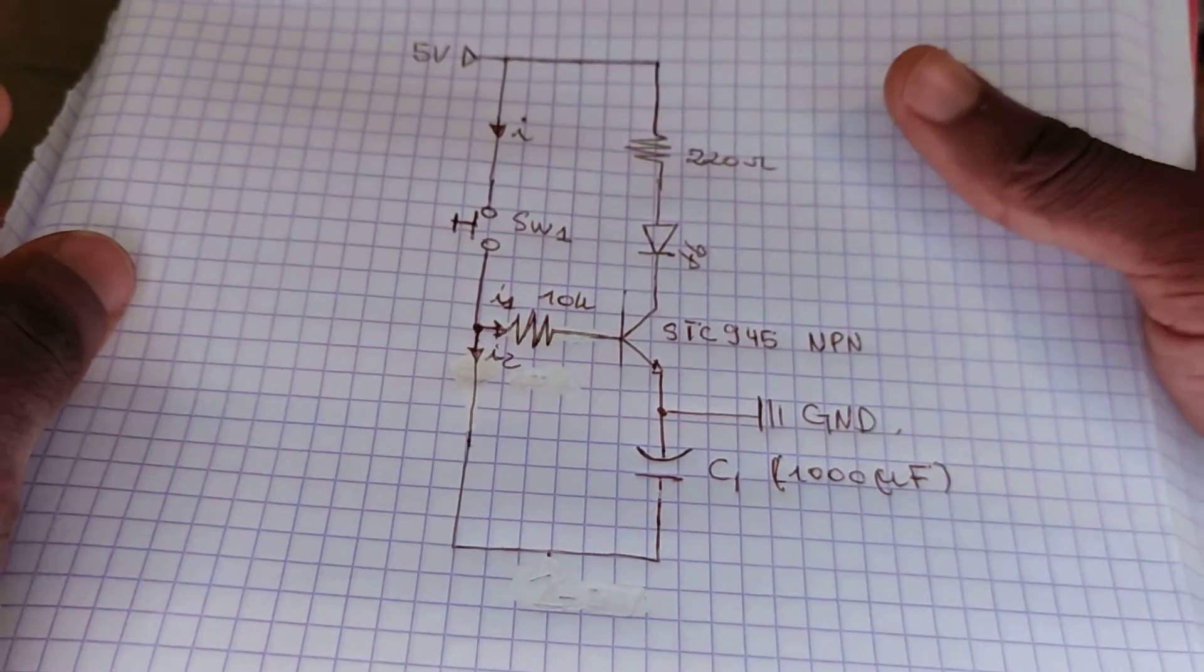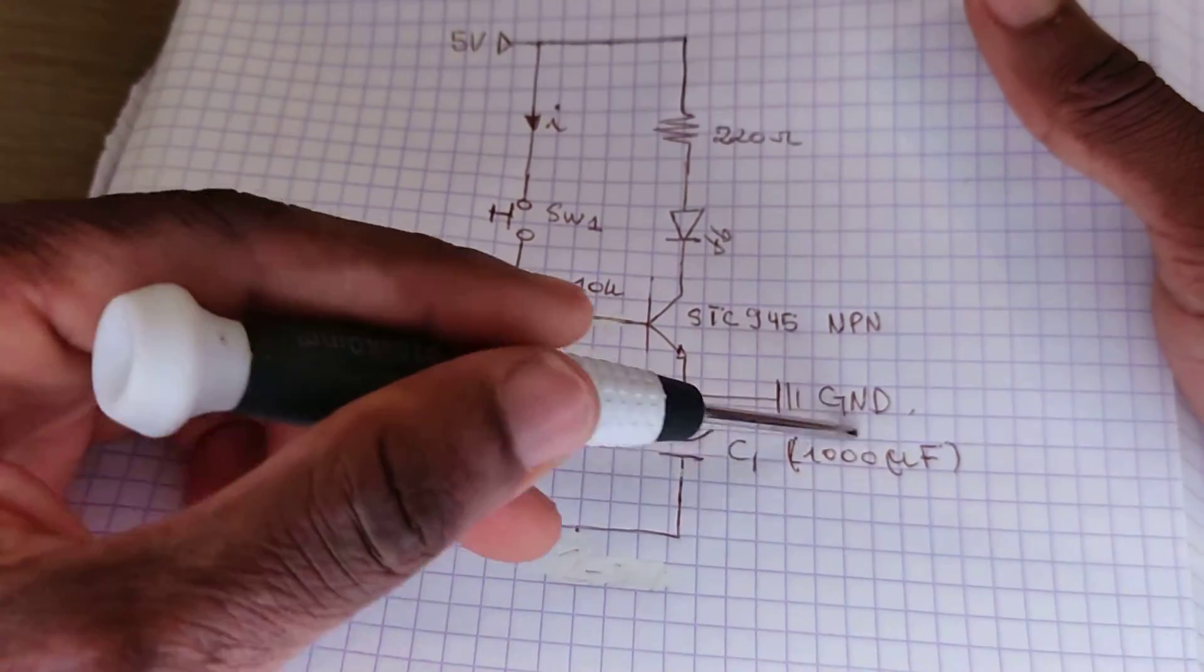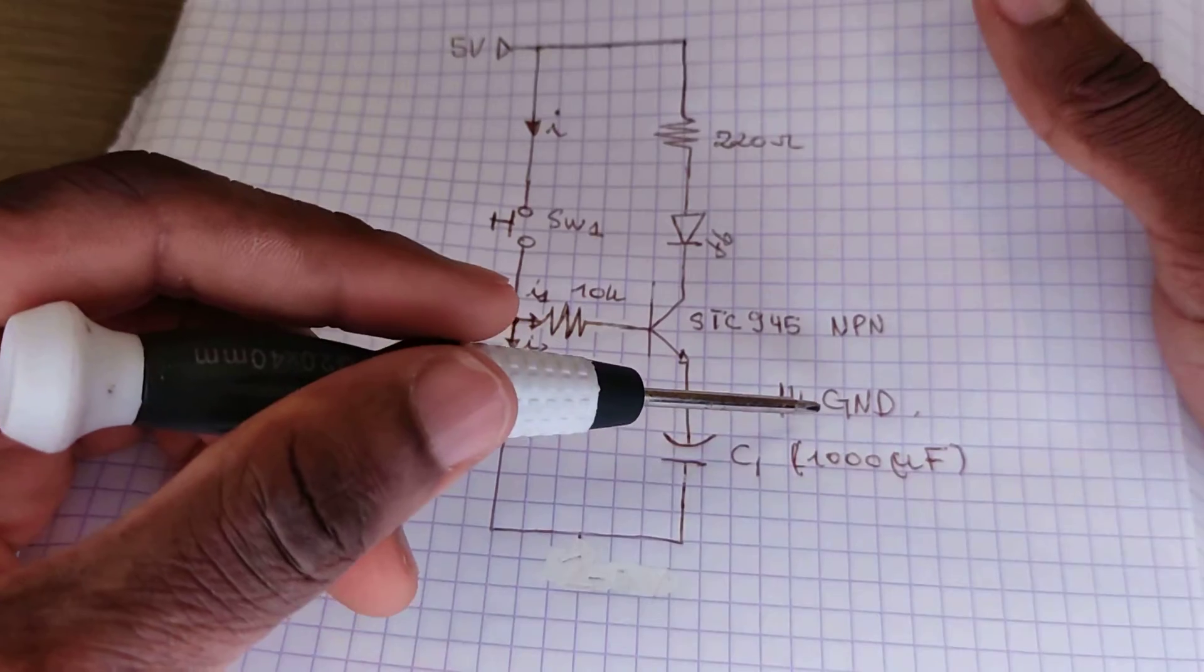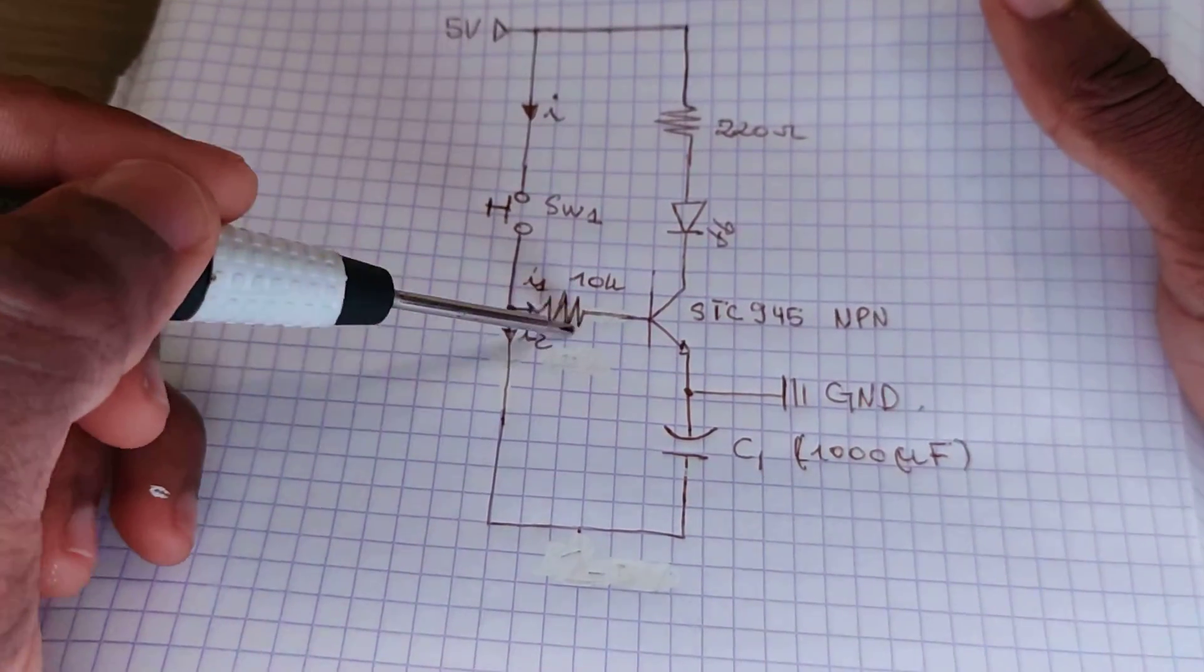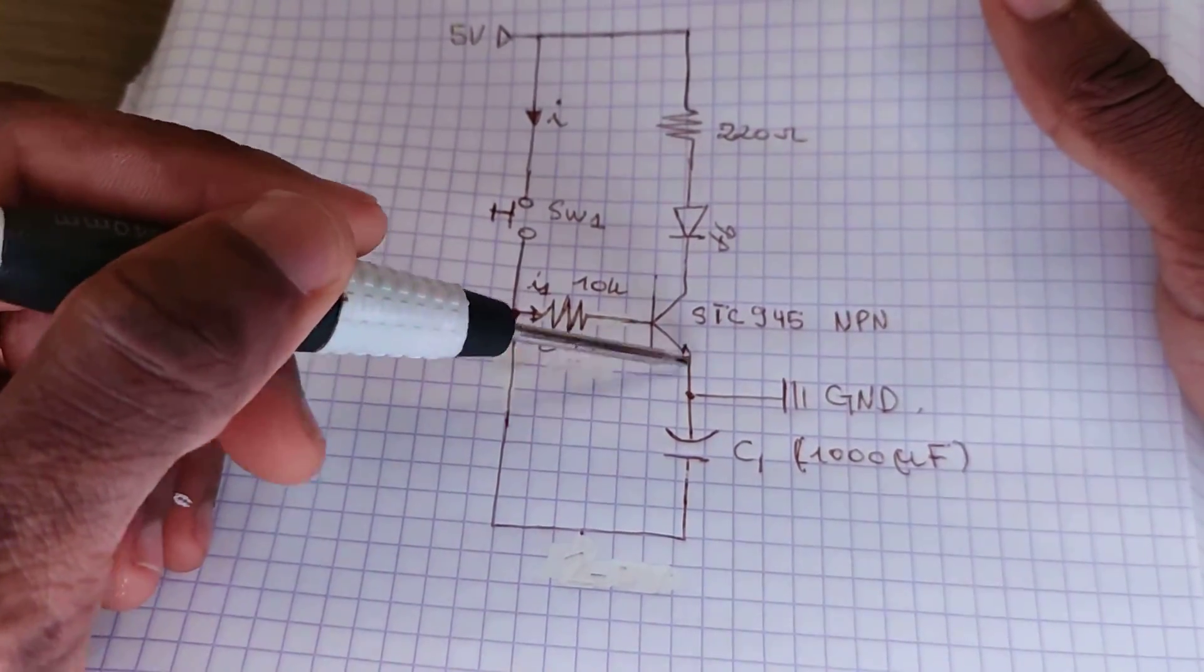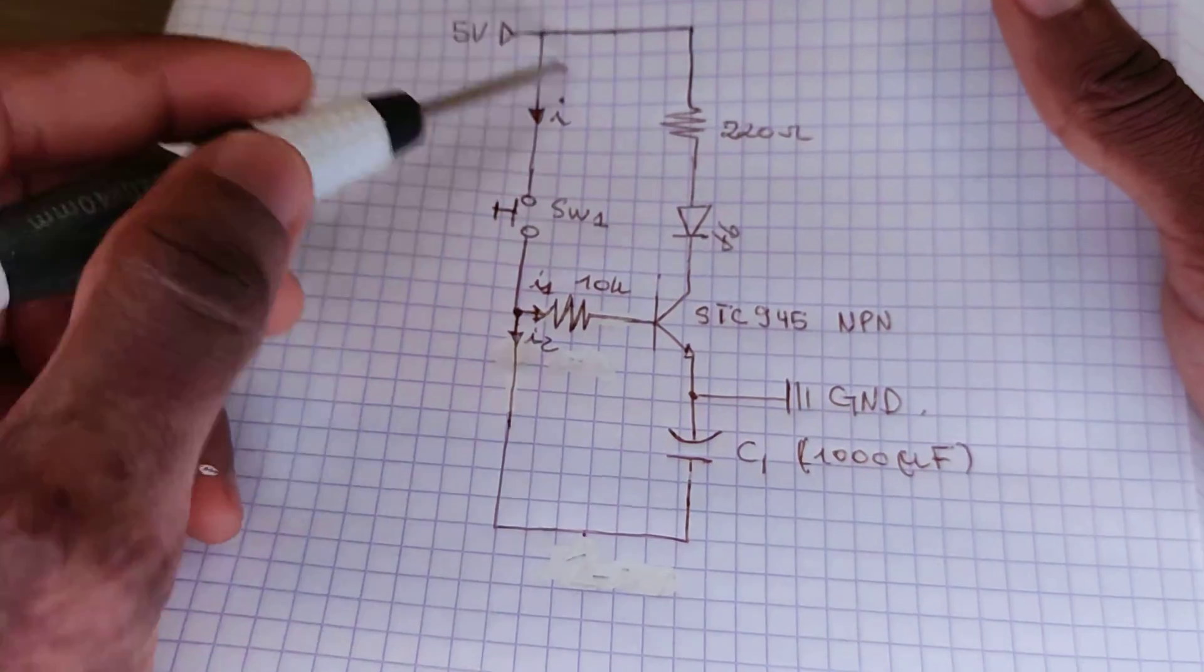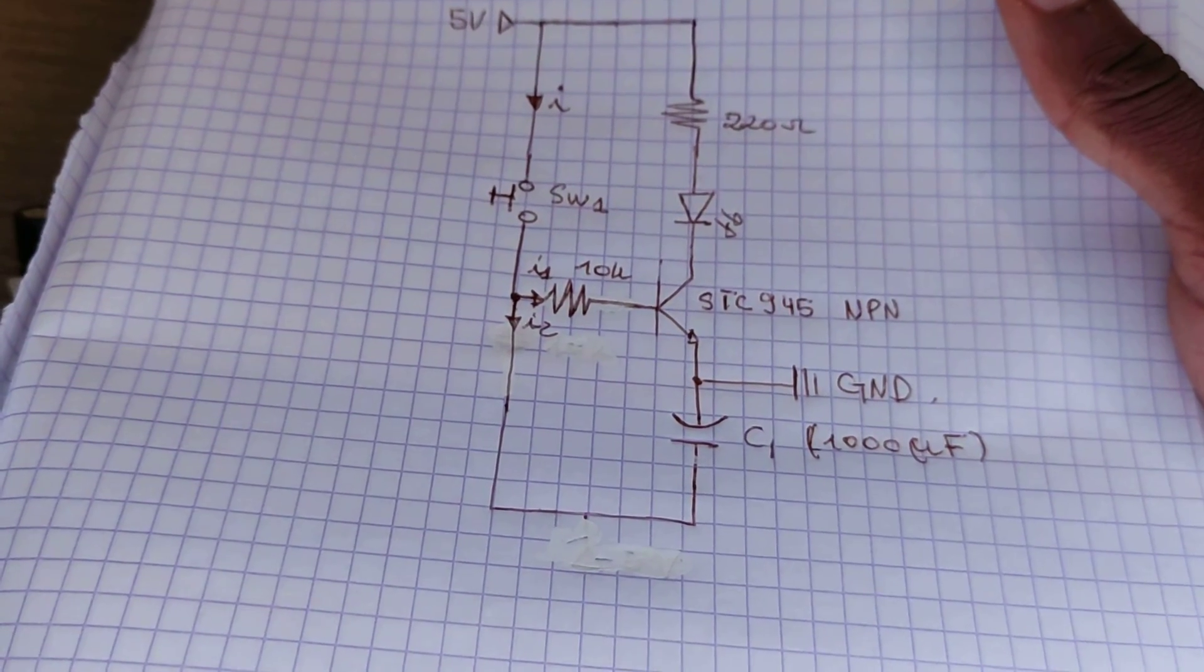So here, this is not 1000 microfarad - I'm using 470 microfarad instead. So that's the 10k ohm resistor with the base, here is the collector, emitter, the push button, the 220 ohm resistor, the LED, 5 volts around here. Okay guys, so thank you so much and I see you in the next video. Bye.